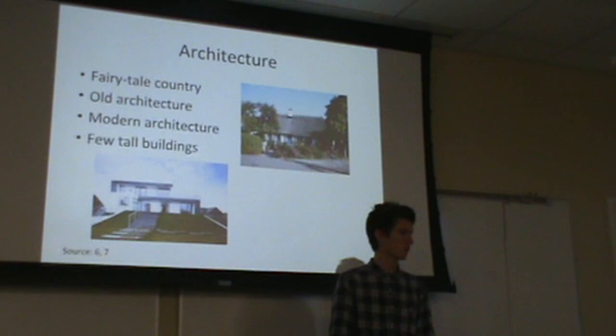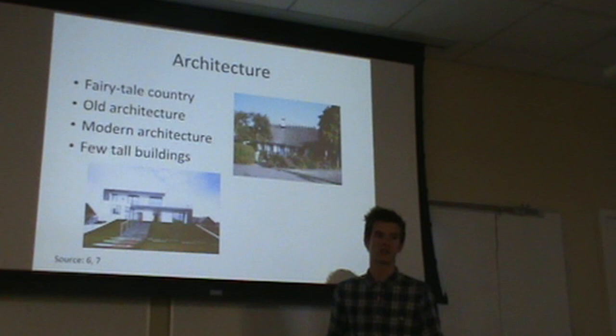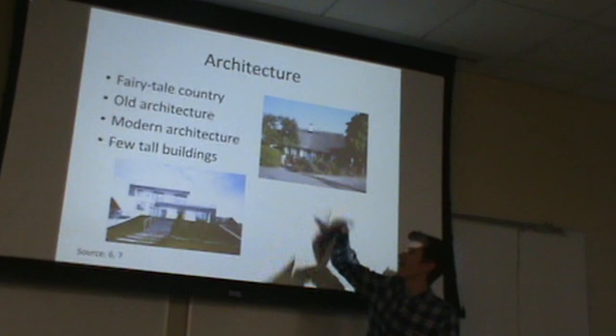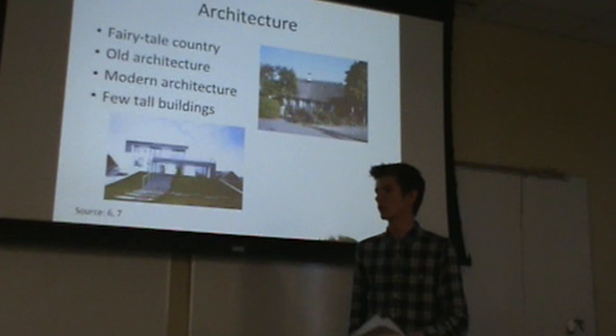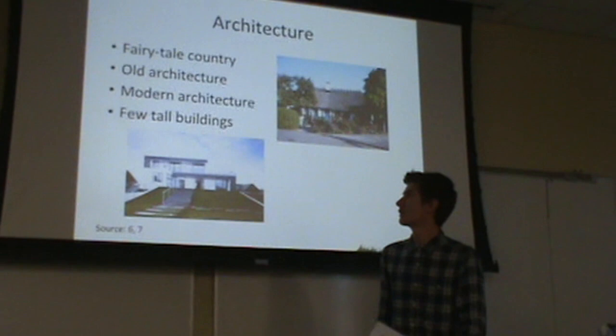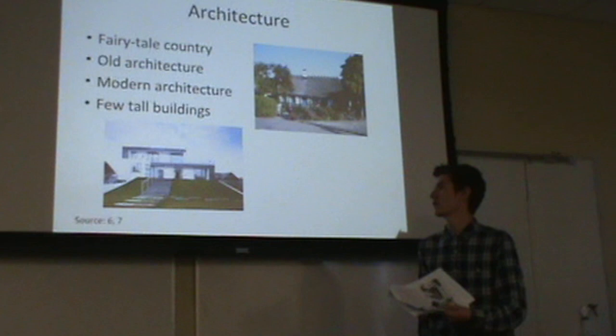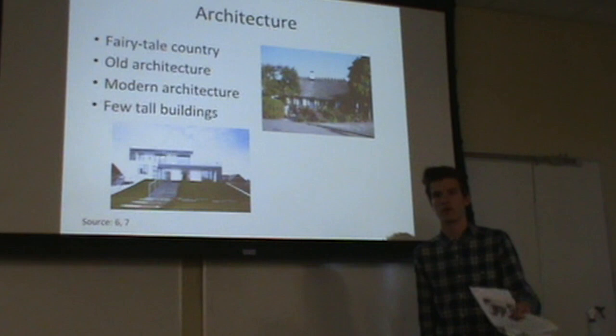When it comes to architecture, we have lived by this fairytale country style. The old buildings and castles are not really big — more like small cubes with small doors and a steeply pitched roof. Modern architecture features big windows and wide open fronts with not much in the front yard. We only have a few tall buildings; back in the days, most buildings had only one or two floors. Even in some big cities, buildings don't go above seven floors.